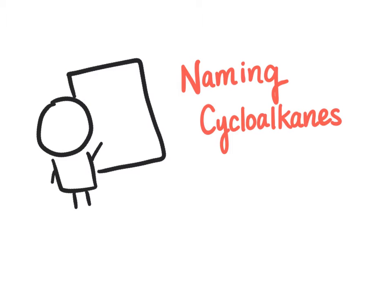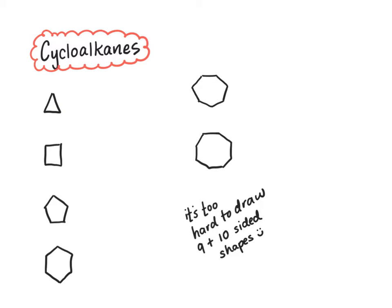In this video we're going to look at naming cycloalkanes. So to start we're going to go through what the cycloalkanes are. A cycloalkane is a closed ring structure with carbons at the corner of each side.